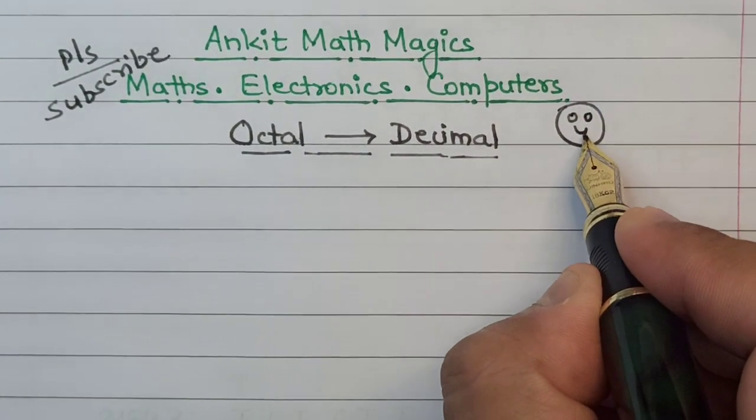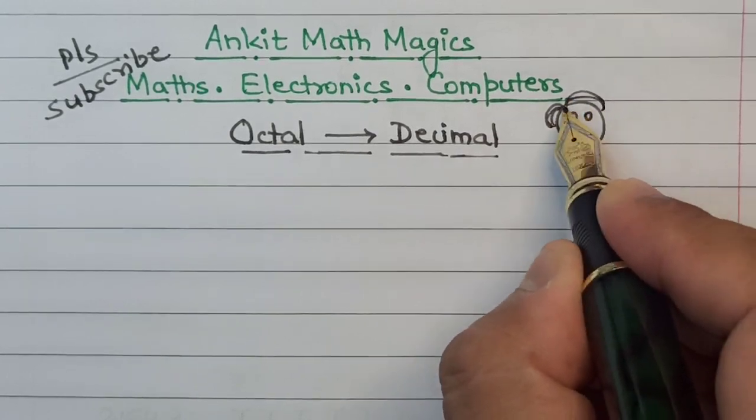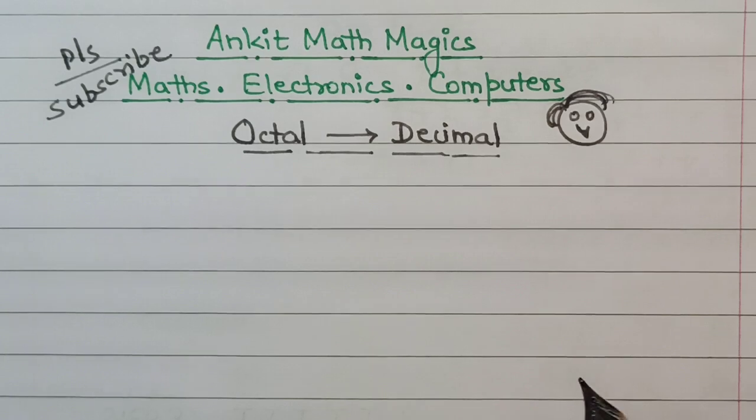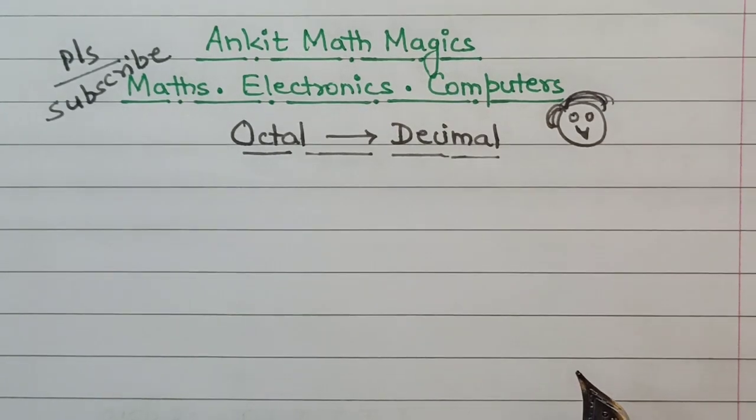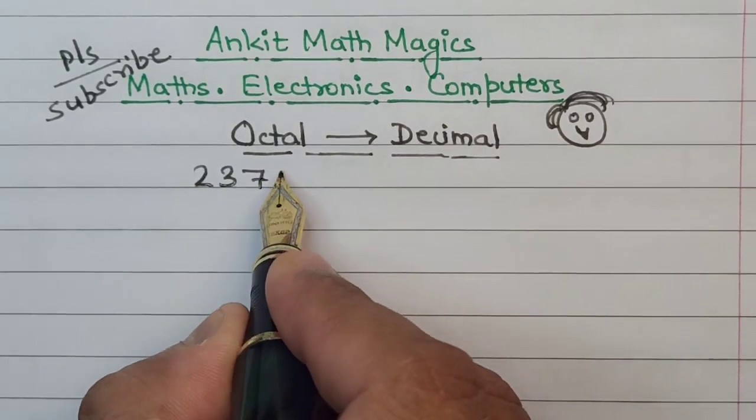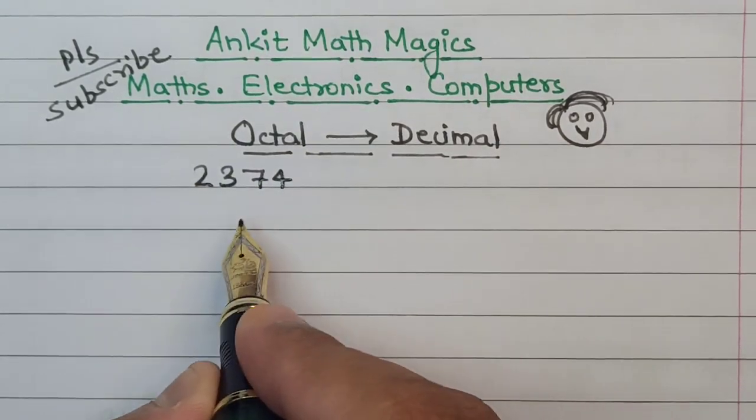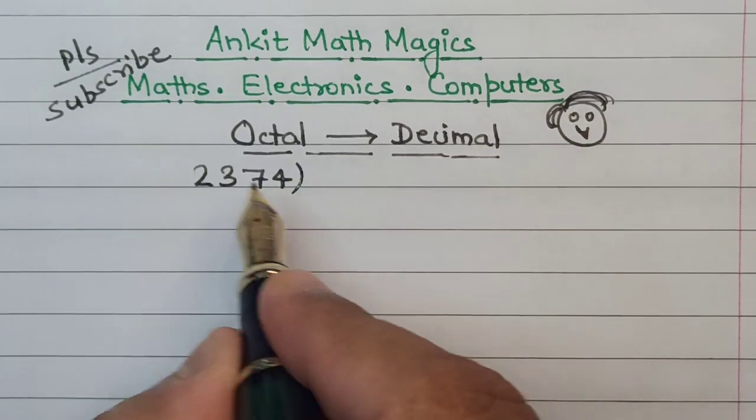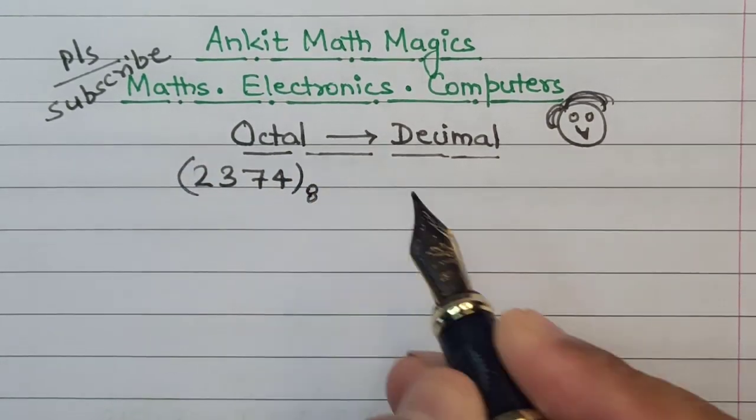So let's start the solution to this particular problem with a big smile on the face. The number that we have to convert today is 2374. Now this particular number here is in its octal form, so let me write this number enclosed in a bracket with a base 8.